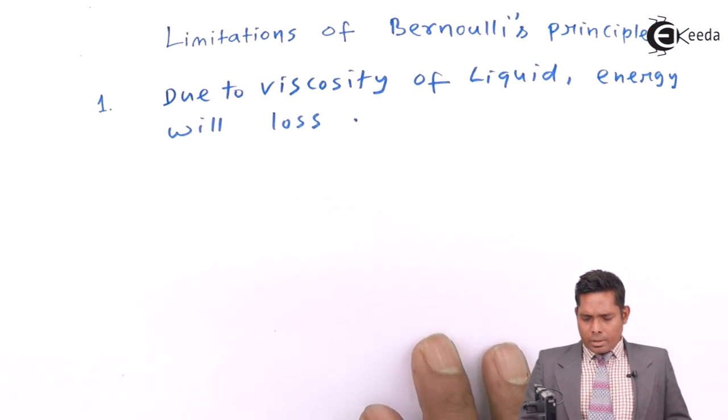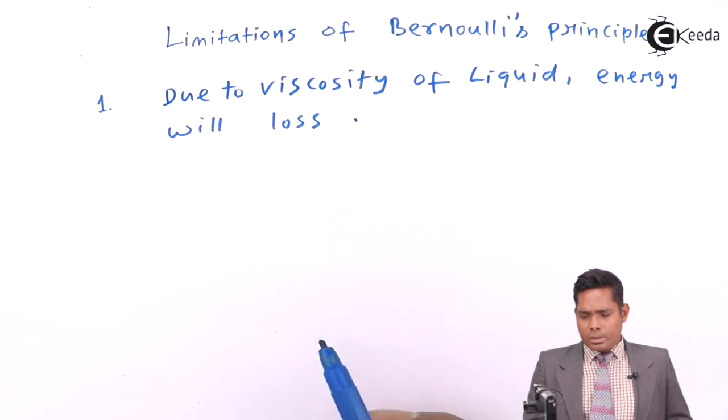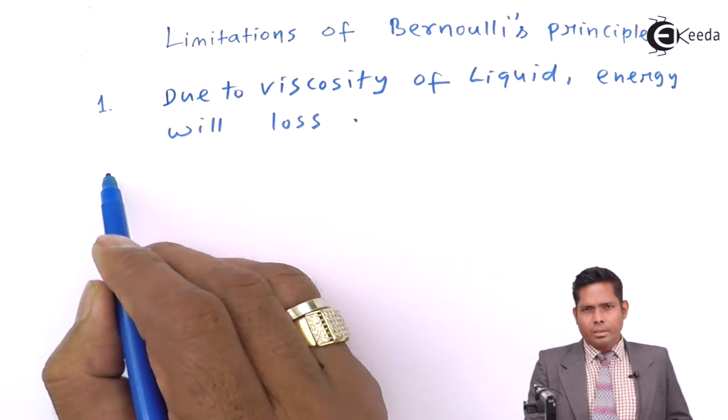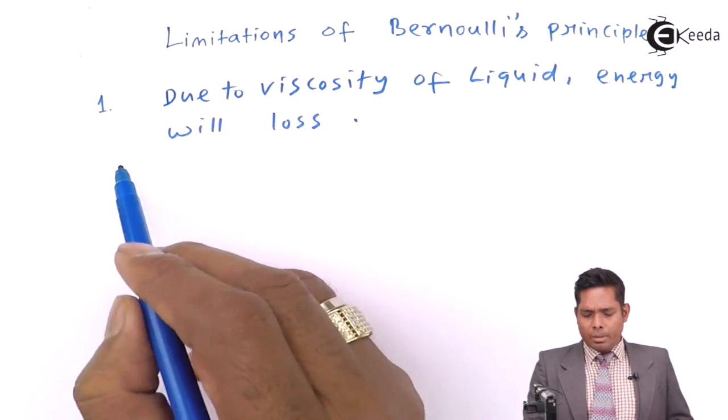So this is one thing that the energy will definitely decrease as the flow moves forward. So that consideration of energy constant is, you can say, an error or this is all the limitations.